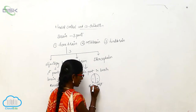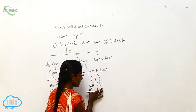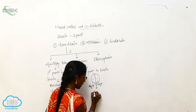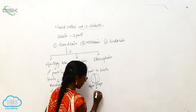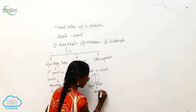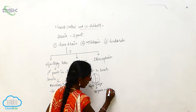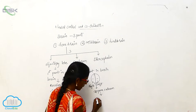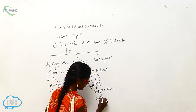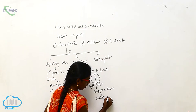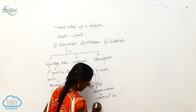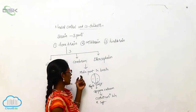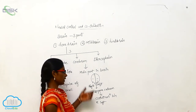The left and right cerebrum are interconnected by the corpus callosum. The corpus callosum brings coordination between the right and left cerebrum.